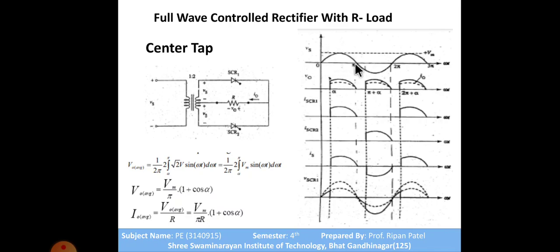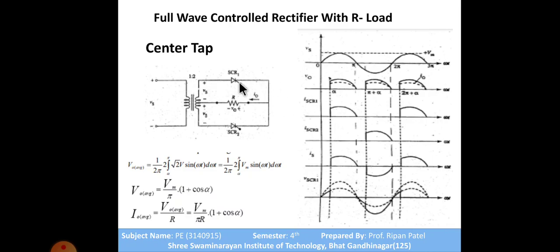In the positive half cycle from zero to pi, SCR1 comes into forward bias whereas SCR2 comes into reverse bias. When we give a gate pulse to SCR1 at firing angle alpha, SCR1 turns on. Current flows through the path: SCR1, then through R, then to the zero potential. So I get the output voltage across the load from alpha to pi.